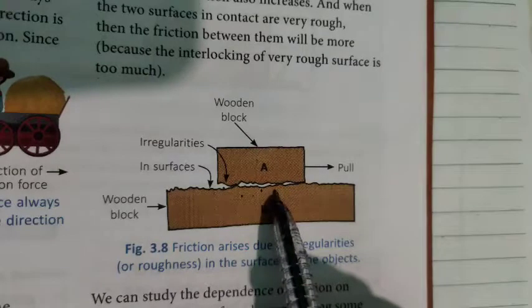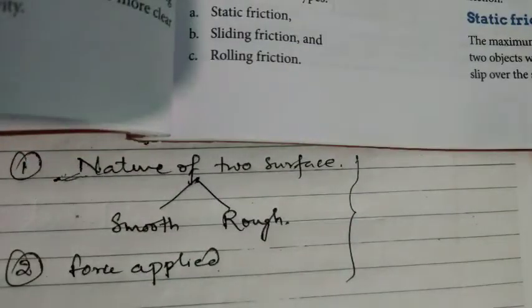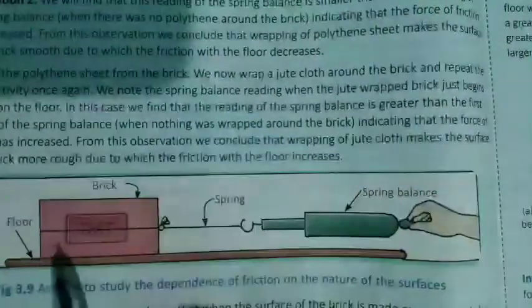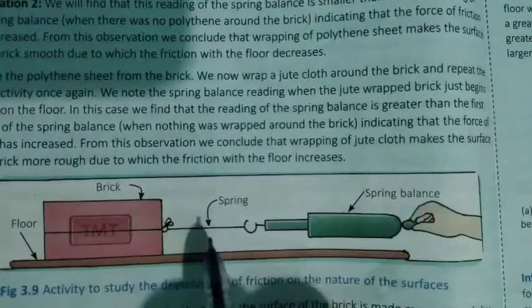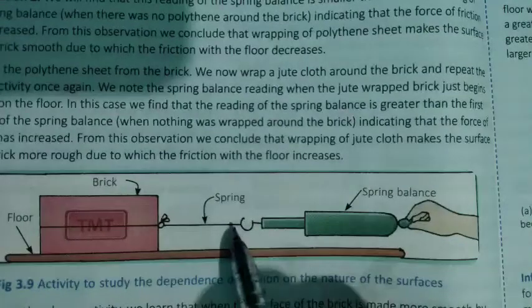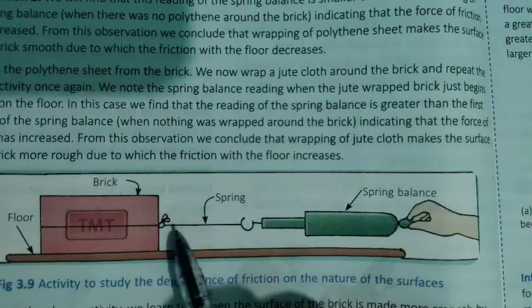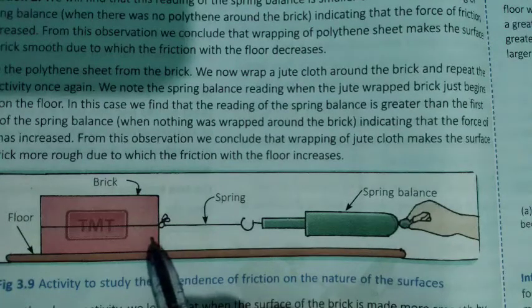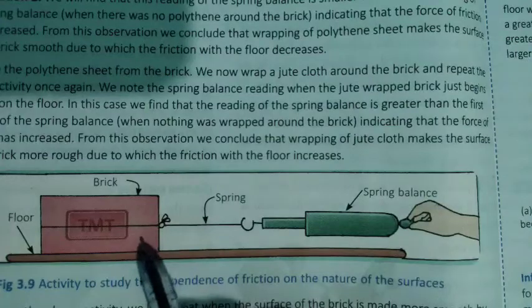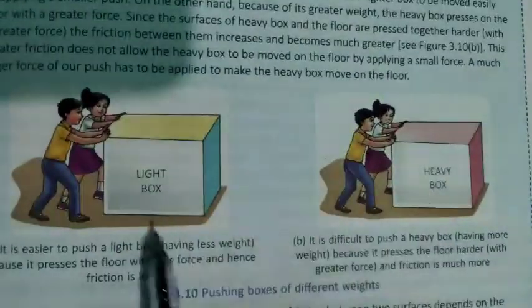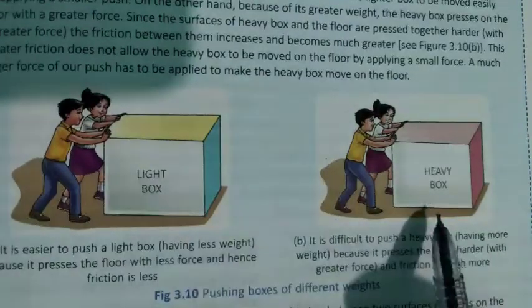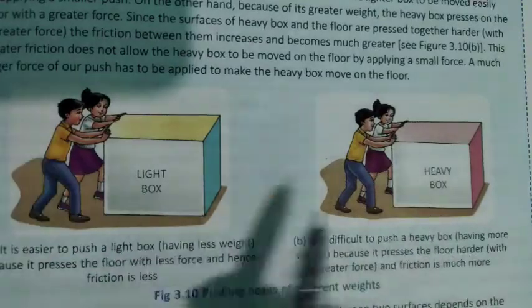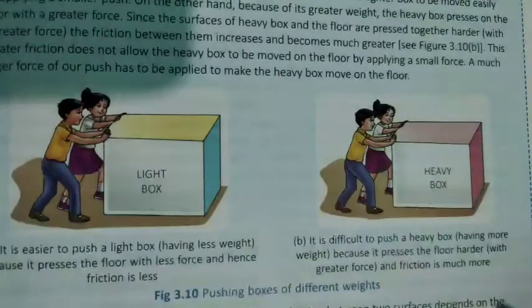Now if the surface is smooth, the object will easily move. Another example from the book: the floor surface is smooth, a brick is kept on it and is being pulled by tying a rope. It will be easier to move the brick over the smooth surface. Similarly, for a light box and a heavy box, when both surfaces are smooth, it will be easier to move the box.